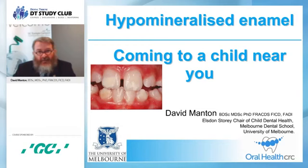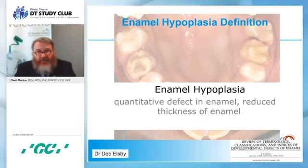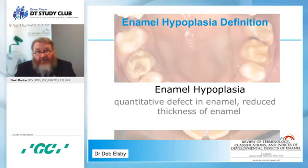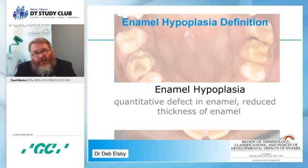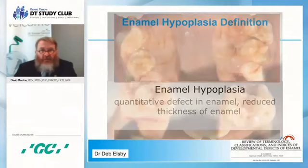One of the main distinctions we have trouble with is defining hyperplasia and hypomineralization. The main feature of hyperplasia is thin enamel — it's a quantitative defect. The ameloblasts are affected quite early on, so there's less matrix secreted and the enamel in that area is reduced in thickness, but in most cases it's of normal quality and the mineralization is normal. There is quite an important distinction between hyperplasia and hypomineralization because the performance of hypomineralized enamel is markedly different to hyperplastic enamel.